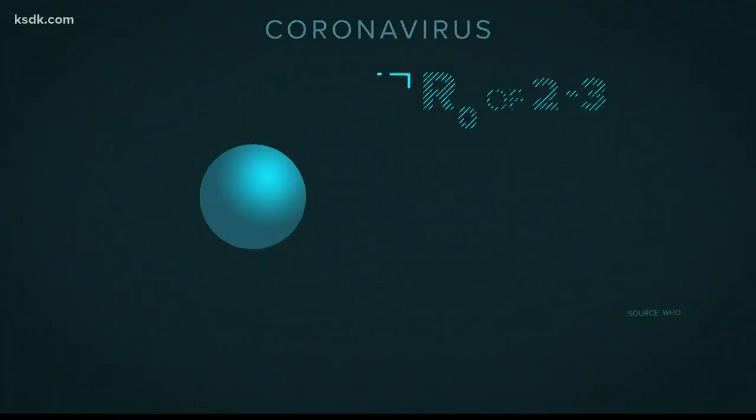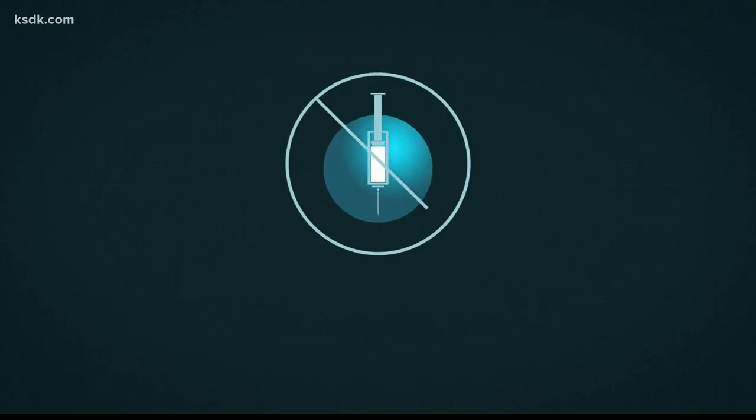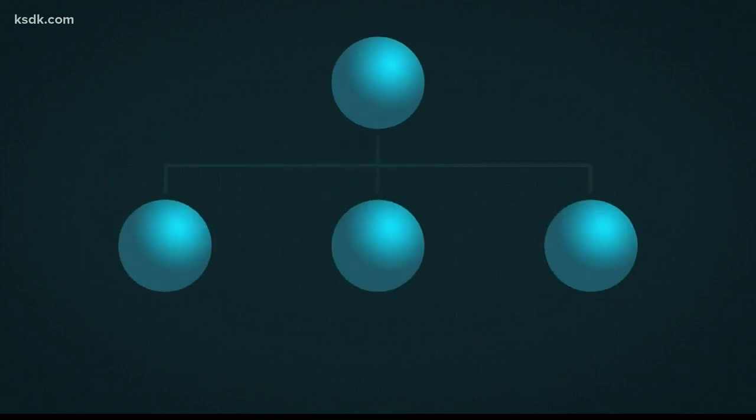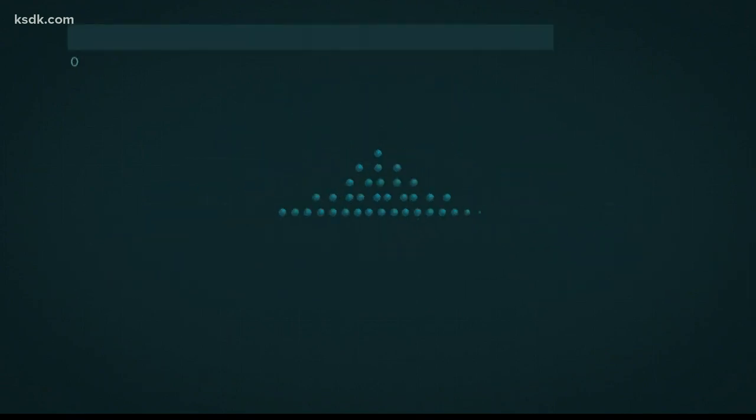Now let's take the new coronavirus. Its R-naught of two suggests that it's not as harmful. But as you now know, no one has protection. So you and your dot will infect two, and those two will infect four, and so on and so on.